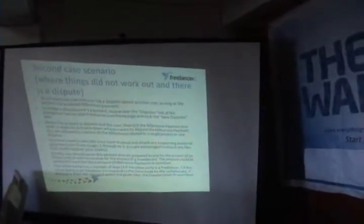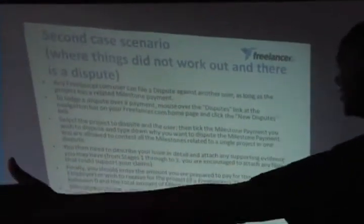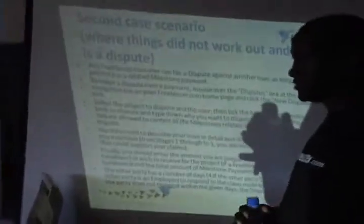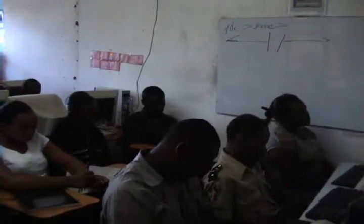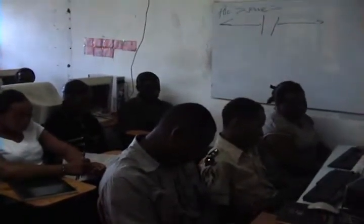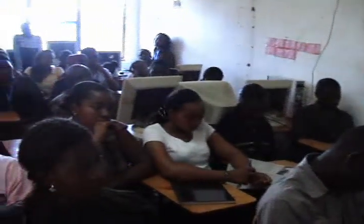There is a dispute resolution system in freelancer. If Grace does not agree to the job done by John, she can file a dispute. If John did the work properly and Grace is refusing to pay, John can go to the dispute resolution system where a judge will look at both parties and give money to the person who deserves it — all happening online.